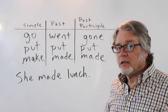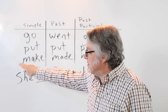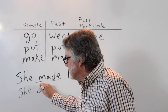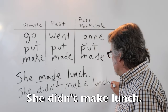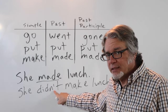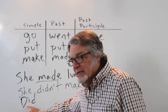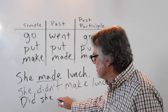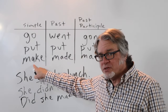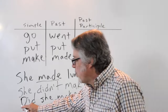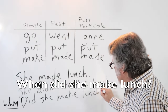She made lunch — this is in the past tense. To make this negative, use 'did' with 'make': She didn't make lunch. Here's the contraction for 'not' and 'did': didn't. The question is formed by putting 'did' before the subject: Did she make lunch? The main verb is in the simple form. And for a question word, you can use something like 'when': When did she make lunch?